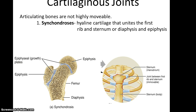Then there are cartilaginous joints. Again, you do not expect to see much movement between the bones. One example is the synchondrosis, which is hyaline cartilage that unites either the first rib to the sternum, or the diaphysis and the epiphysis — where the epiphysial growth plate is. This would only exist in people whose long bones are still growing in length, such as children.